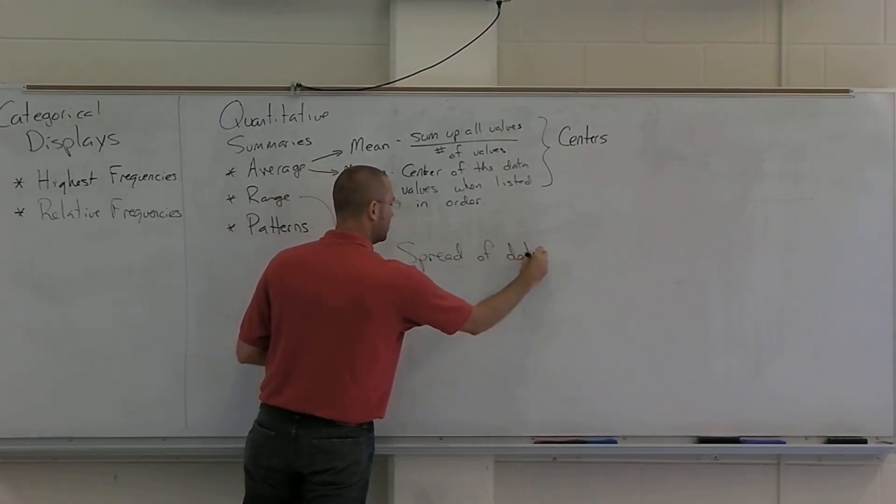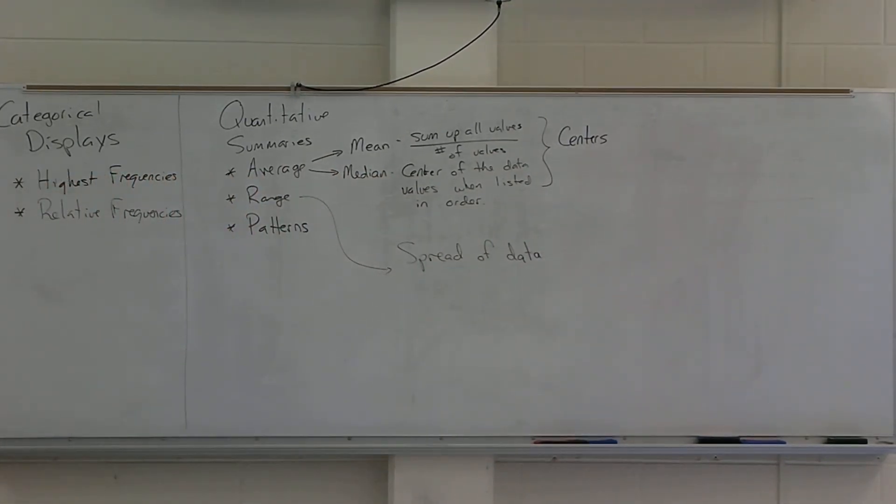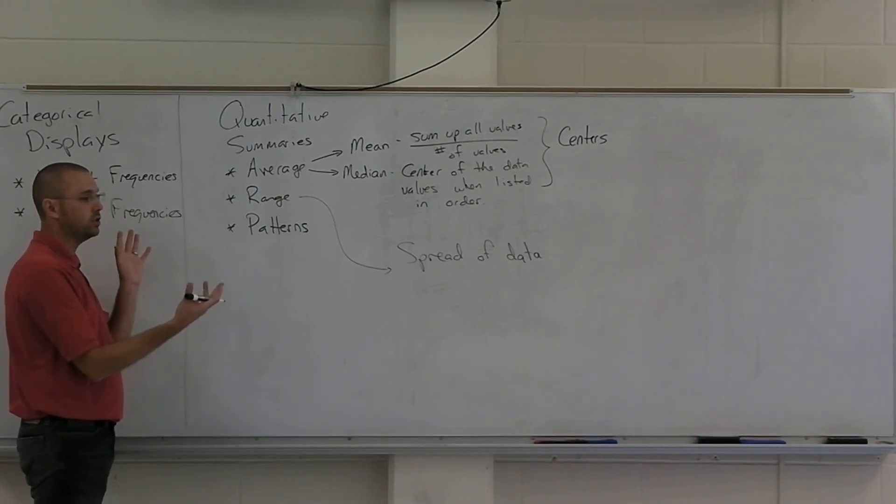So the range represents one of a couple of different ways that we can measure the spread of our data. There are several others that we'll talk about. But understanding how spread out our data is is an important aspect of utilizing it. We have to know information about how spread out our data is. And each of the different measures of spread tells us something different about the data.